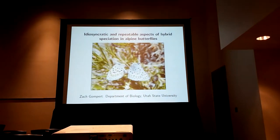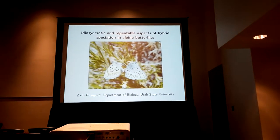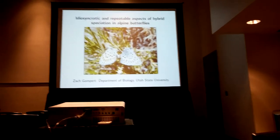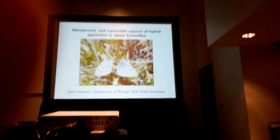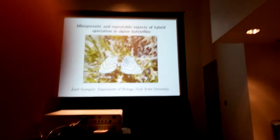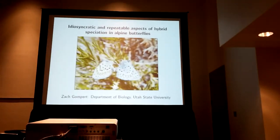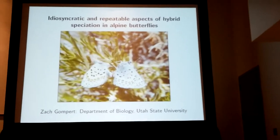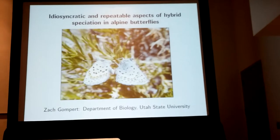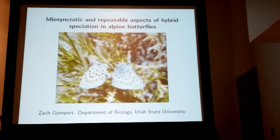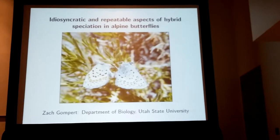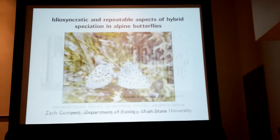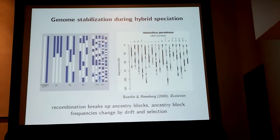Similar environmental challenges, and sometimes involving some of the same genes or even alleles. Homoploid hybrid speciation — that is, speciation catalyzed by hybridization without a change in chromosome number, as has happened in the butterfly studies shown here — is a specifically interesting case to think about repeatability, which is an opportunity to look at repeatability in a quantitative way across the genome. That's what I want to think about now in the context of genome stabilization.